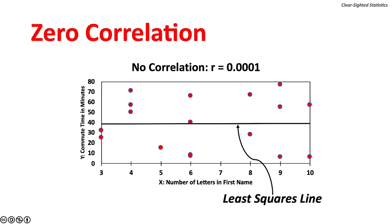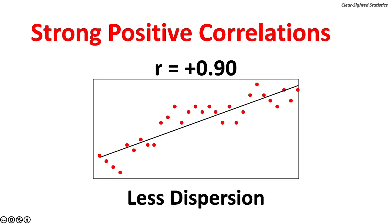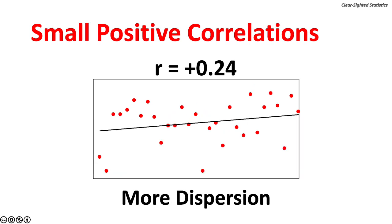Zero correlation means there is no relationship between the independent and dependent variables. In a strong positive correlation, as the independent variable X increases, the dependent variable Y goes up. An R score of positive 0.90 is a very strong correlation, with XY measures very close to the least squares line. By contrast, an R score of positive 0.24 is a small correlation, with XY variables more dispersed from the least squares line.